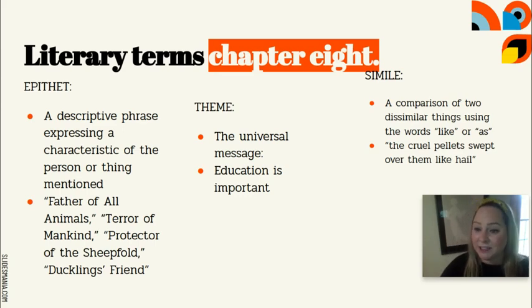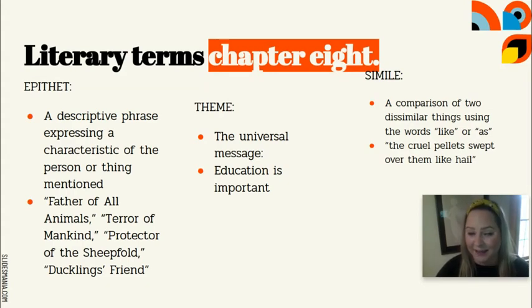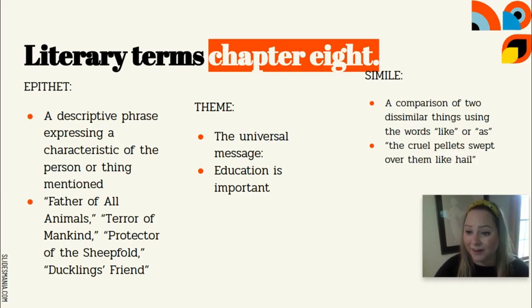We are also continuing our theme in Chapter 8. The theme is the universal message of a story, and our theme is still the importance of education and the consequences of being uneducated. You see in this chapter, yet again, the consequences of the overwhelming majority of animals being illiterate — they don't notice the changes to the commandments on the barn wall, and the animals that are educated have more power and safety than the others.